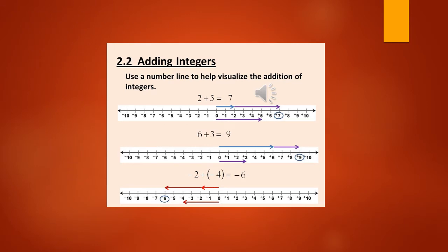Let's understand the concept of adding integers. For example, 2 plus 5 equals 7. On the number line we mark from 0 to 2, then 5 more places up to 7. In the next example, 6 plus 3 equals 9. We take the integer from 0 to 3, then move 6 more places from 3 to 9. So 6 plus 3 is 9.